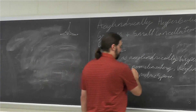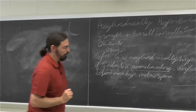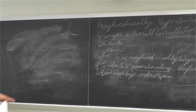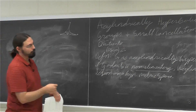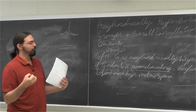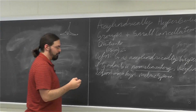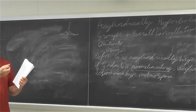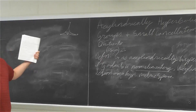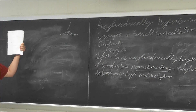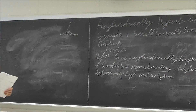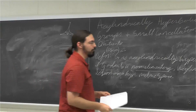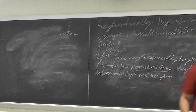For the non-elementary condition on a group action on a metric space, it means that the limit set of the group has at least three points on the boundary. If you take a point in the space and look at the G-orbit, there should be at least three limit points — accumulation points of that orbit — on the boundary.